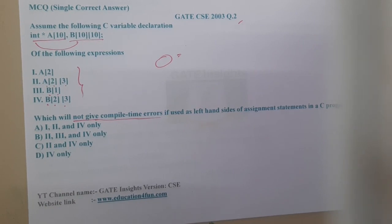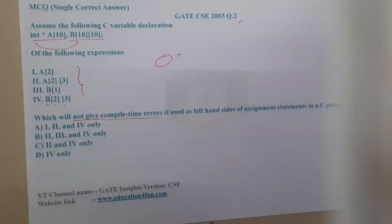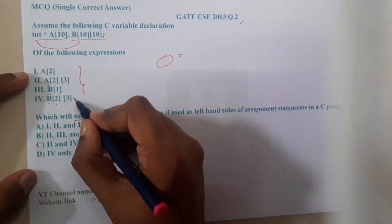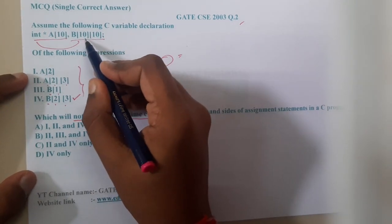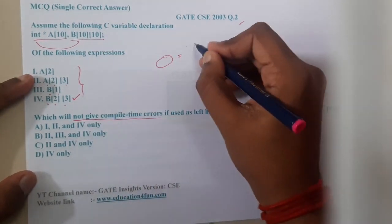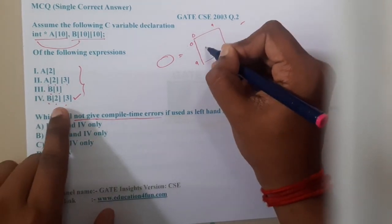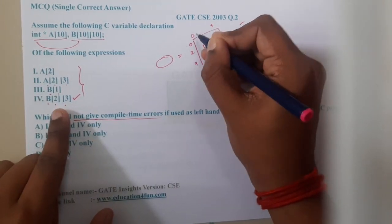Now let's start. The simple option according to me, B will be the correct option because we are having a slot 2, 3. Basically if you draw a 10 by 10 matrix, that is nothing but 0 to 9 and 0 to 9. You are having a slot [2][3], so at some point 2 and 3.